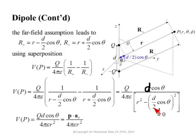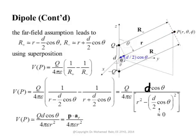This d over 2 term might be in nanometers while R is in kilometers, so they don't compare. Approximately, the potential at any point at distance R from the dipole, making an angle theta with the dipole axis, is given by V = Qd cosine theta over 4 pi epsilon R squared. Here, Qd in the z-direction is the dipole moment, and AR is the unit vector pointing from the origin to the observation point. So this can be written as P dot AR over 4 pi epsilon R squared.